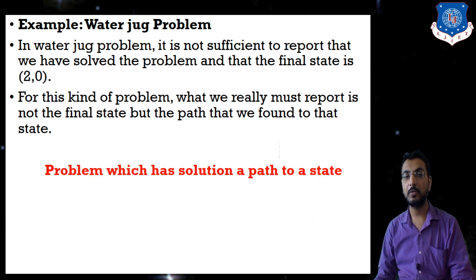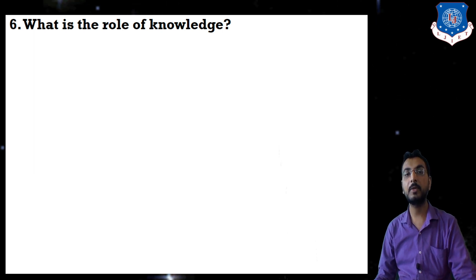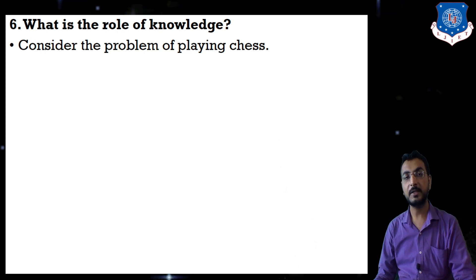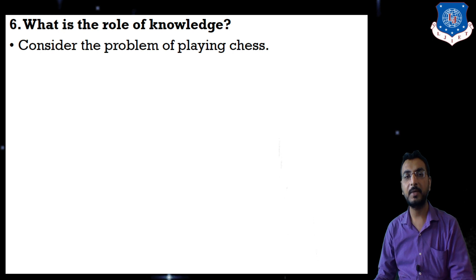So the water jug problem has a solution that is a path to a goal state. Now the next problem characteristic: what is the role of knowledge — that is, how much knowledge will be required? Consider the problem of playing a chess game. Chess is one of the most intelligent games; a lot of intelligence is required to play it well, unlike tic-tac-toe which is a simpler game that does not require a lot of knowledge.